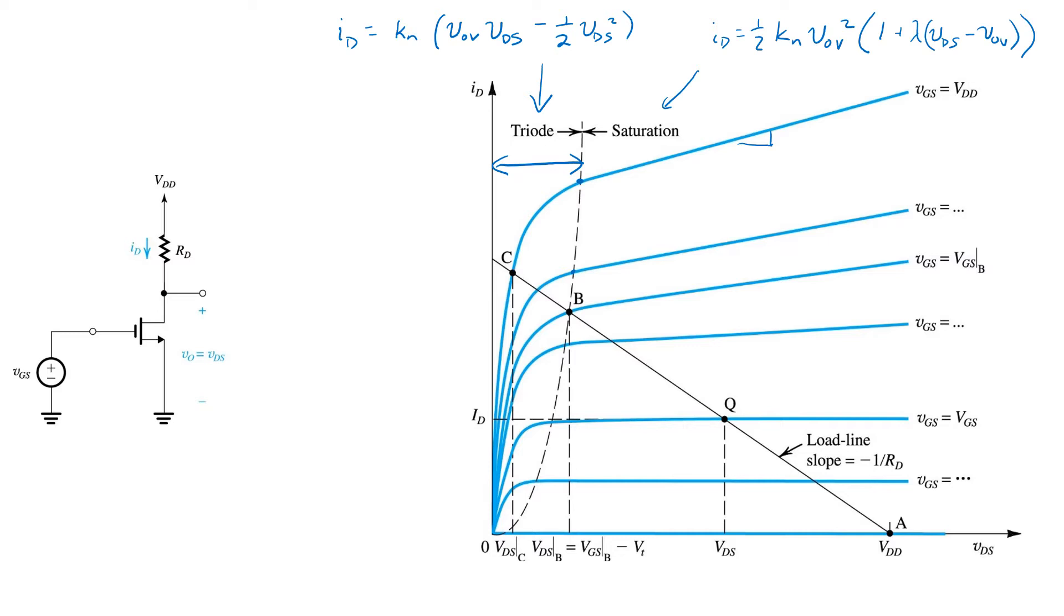However, there's another relationship that governs, that relates the drain current ID to VDS, and that's Ohm's law applied to the resistor RD. So, the voltage drop across RD is RD times ID.